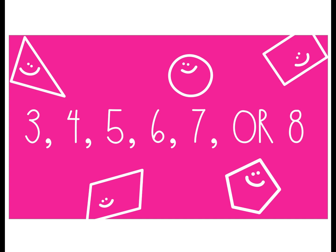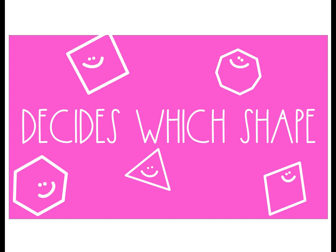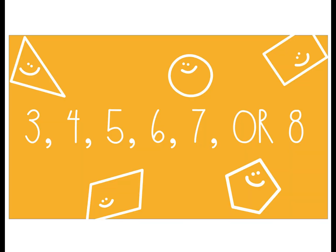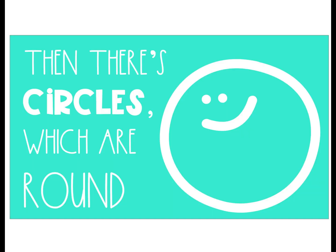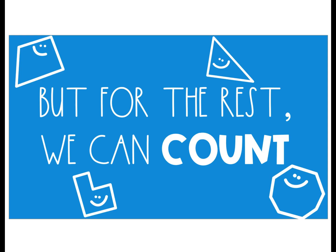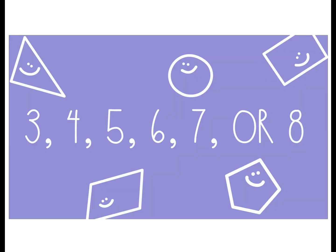3, 4, 5, 6, 7, or 8 decides which shape. Then there's circles which are round, but for the rest, we can't count: 3, 4, 5, 6, 7, or 8.